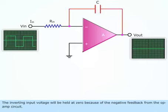The inverting input voltage will be held at zero because of the negative feedback from the op-Amp circuit.